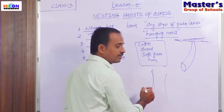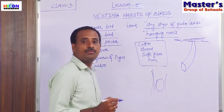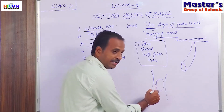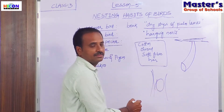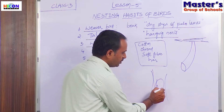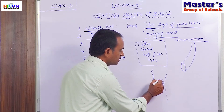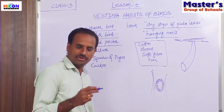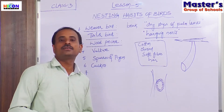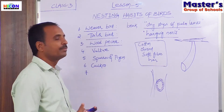So if this is the trunk, the woodpecker will make a hole with the help of its beak and line its nest with soft chips of wood to make its nest comfortable to lay its eggs. This is about the woodpecker bird.